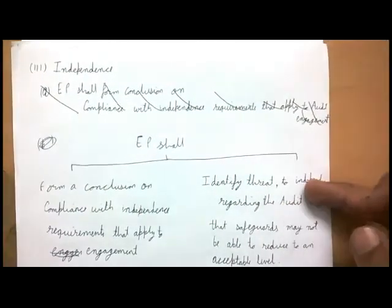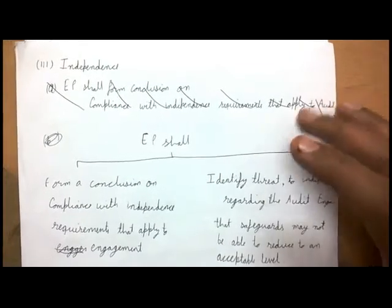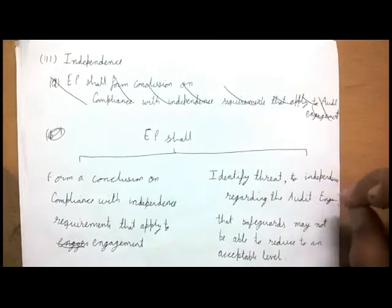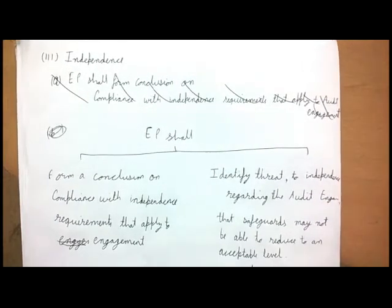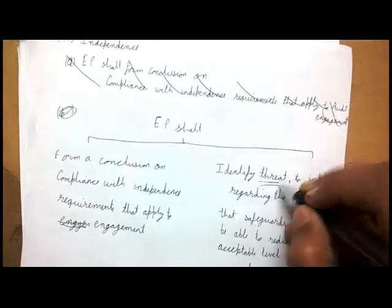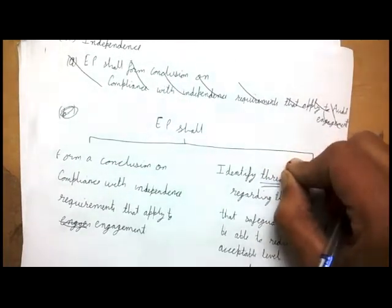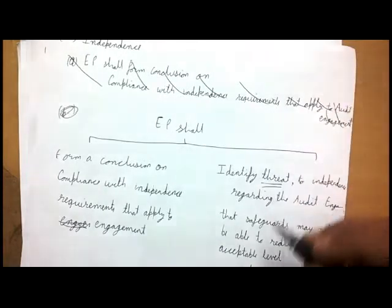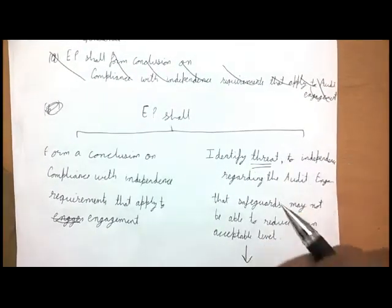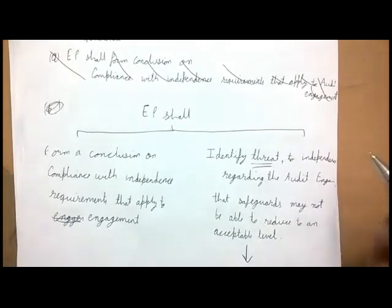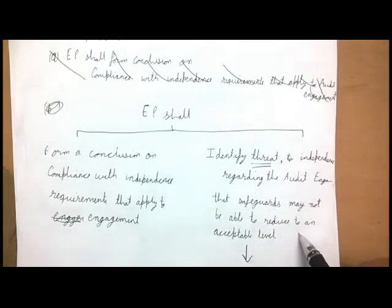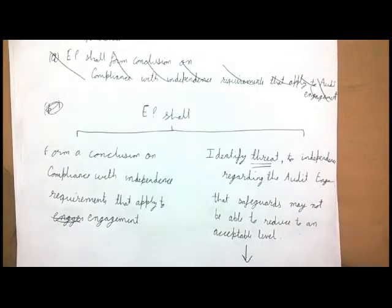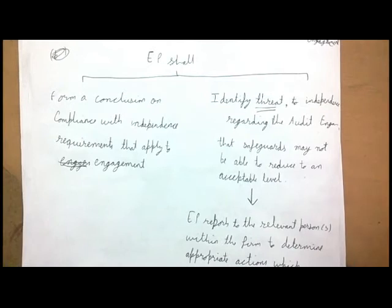The engagement partner must identify threats to independence regarding the audit engagement where safeguards may not be able to reduce them to an acceptable level — meaning the threats are still significant even after taking steps. The engagement partner then reports to relevant persons within the firm to determine appropriate action.